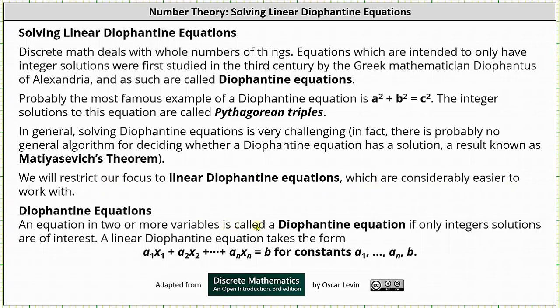An equation in two or more variables is called a Diophantine equation if only integer solutions are of interest. A linear Diophantine equation takes the form a₁x₁ + a₂x₂ + ... + aₙxₙ = b for constants a₁ through aₙ and b.